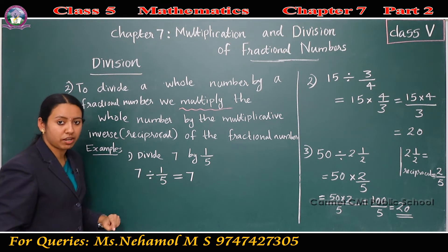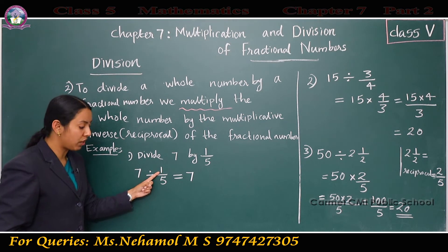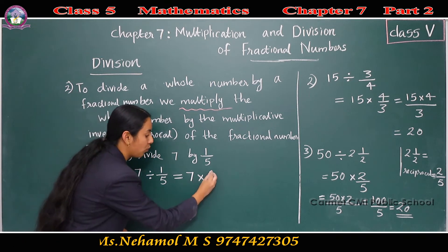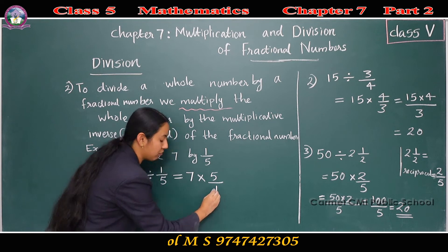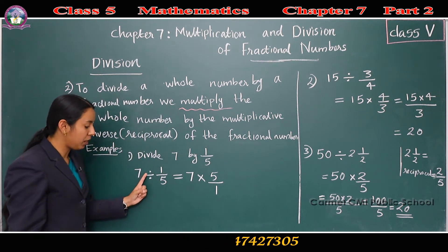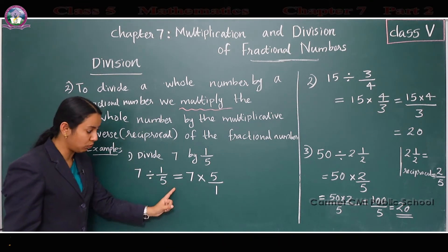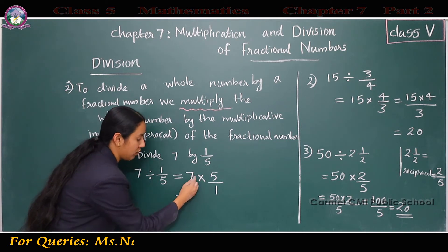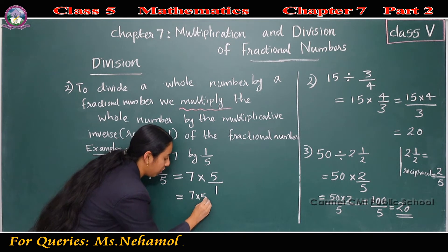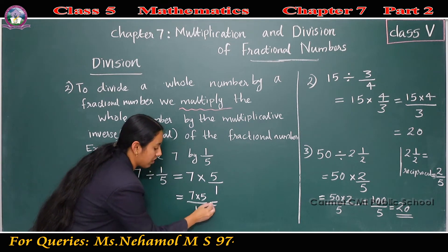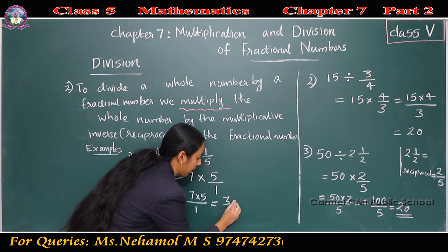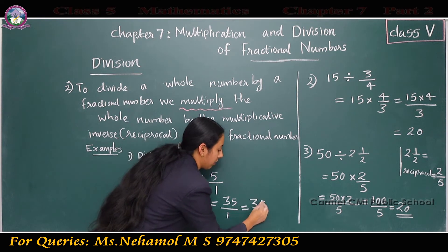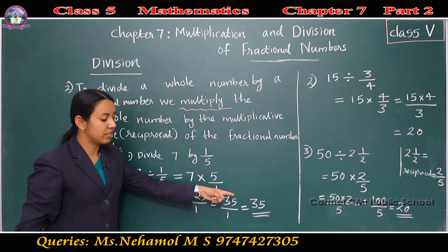What is the reciprocal of 1/5? Reciprocal of 1/5 is 5/1. So 7 into 5/1. That means 7 into 5, all divided by 1. 7 fives are 35. 35 by 1 is 35. So the answer is 35.